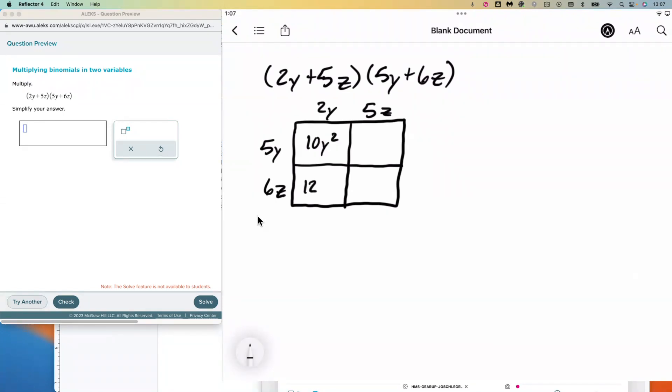Six times two is twelve—that's a y and that's a z. Five times five is twenty-five—we have a y and a z. And then six times five is thirty, and that's z squared because z times z makes z squared.